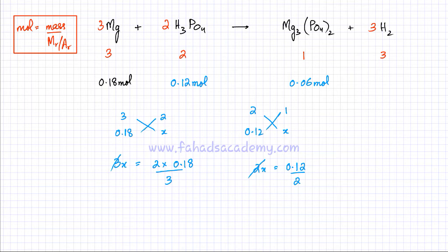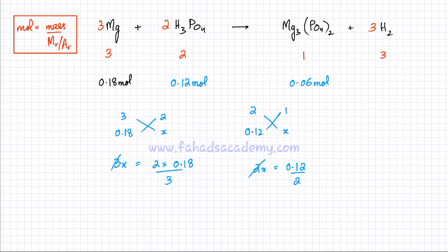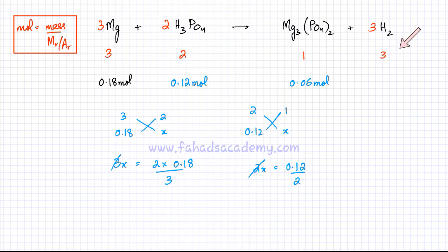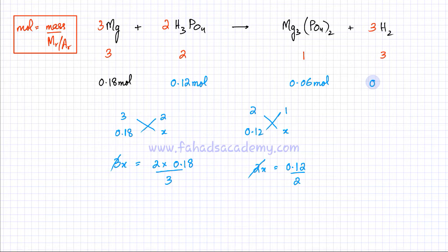Similarly, for hydrogen gas: looking at the ratios in the chemical equation, hydrogen has a ratio of 3 and magnesium also has a ratio of 3. Since both are in a 3:3 ratio, whatever the amount of magnesium, that's going to be exactly the same amount of hydrogen. So 0.18 moles of magnesium gives 0.18 moles of H₂.